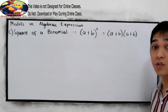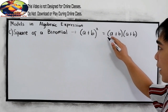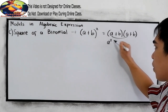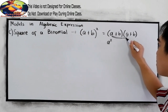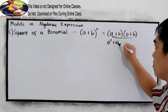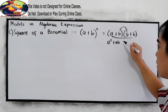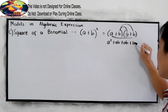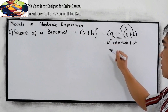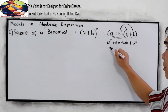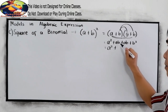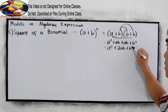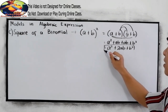In getting the product, we use the FOIL method. Square the first term: a times a, that is a squared. Next, a times b, that is positive ab. Next, b times a, that is positive ab. And b times b, that is positive b squared. This is now the product. Then combine like terms: a squared plus ab plus ab, that is 2ab, then plus b squared. So this is the final answer.